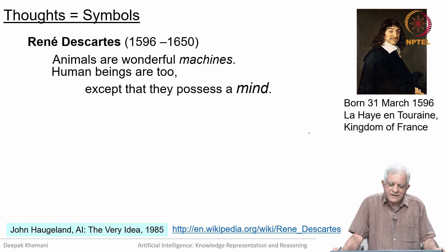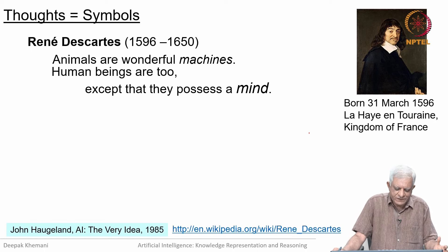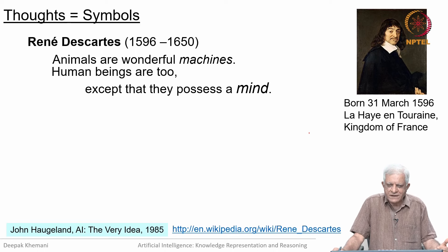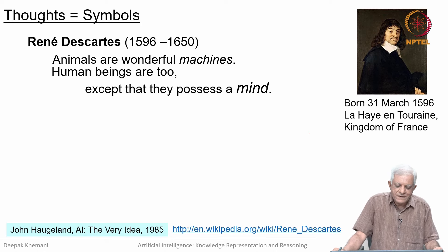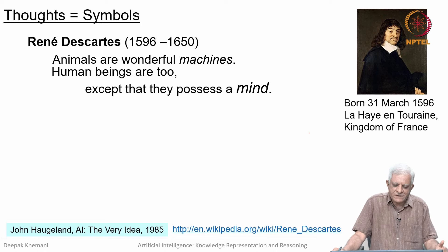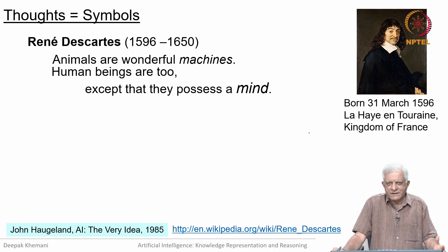The next person we meet is René Descartes, who we know very well — when we say Cartesian coordinates, we mean something he invented. He said that animals are wonderful machines, and then he said that human beings are too, except that they possess a mind.